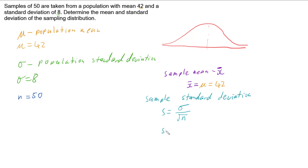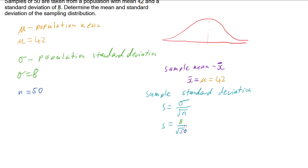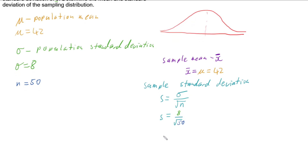So our sample standard deviation is going to be 8 divided by the square root of our sample size 50. If we work that out, we get a sample standard deviation of 1.1314.